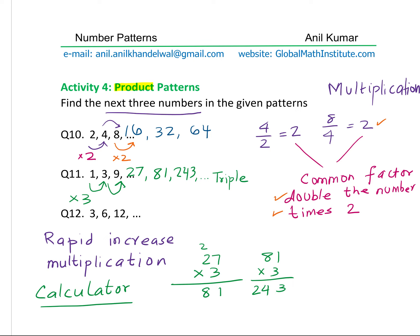Question number 12 — take this as your practice question: 3, 6, 12. To find the next number, divide 6 by 3 to get 2 — you are doubling. So 12 times 2 gives us 24, then 3 dozens which is 36, then 4 dozens which is 48, and so on. Likewise, we can get our series.